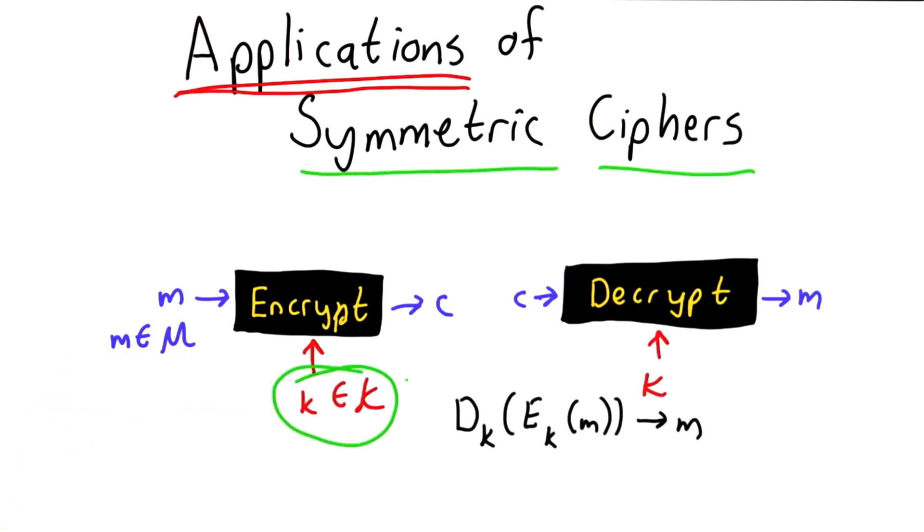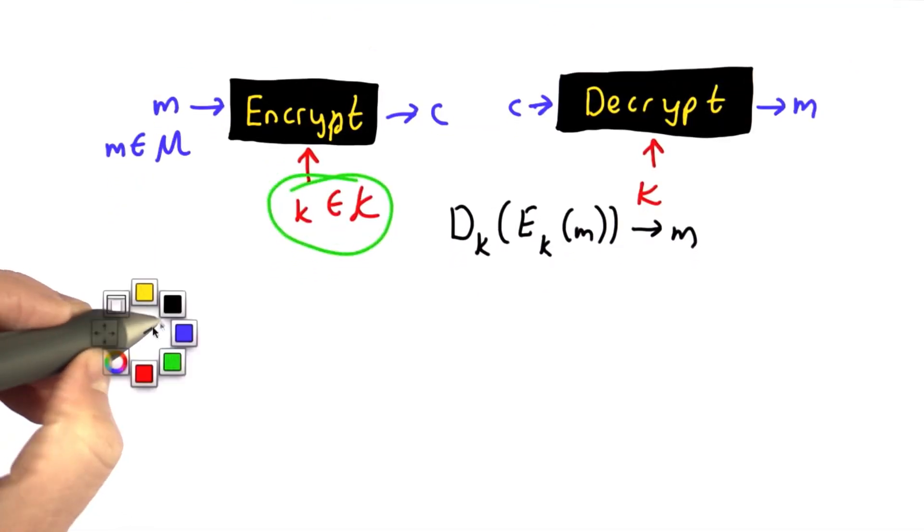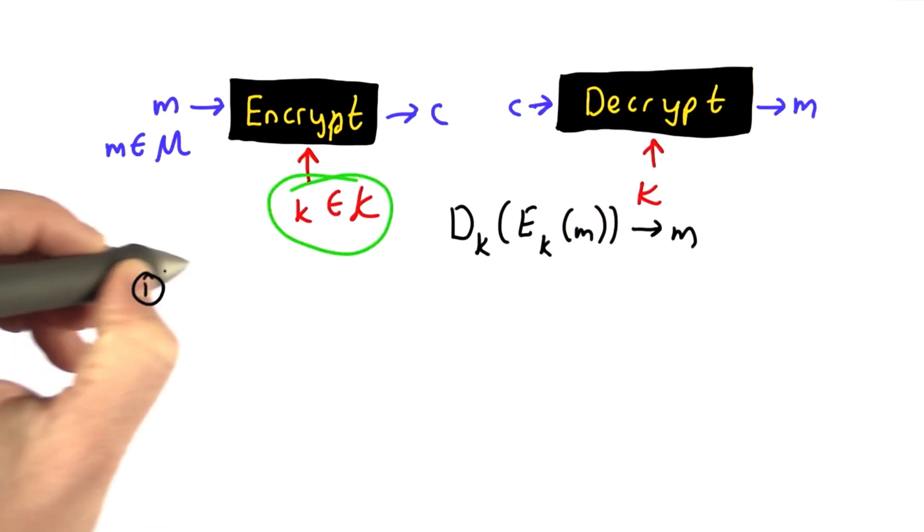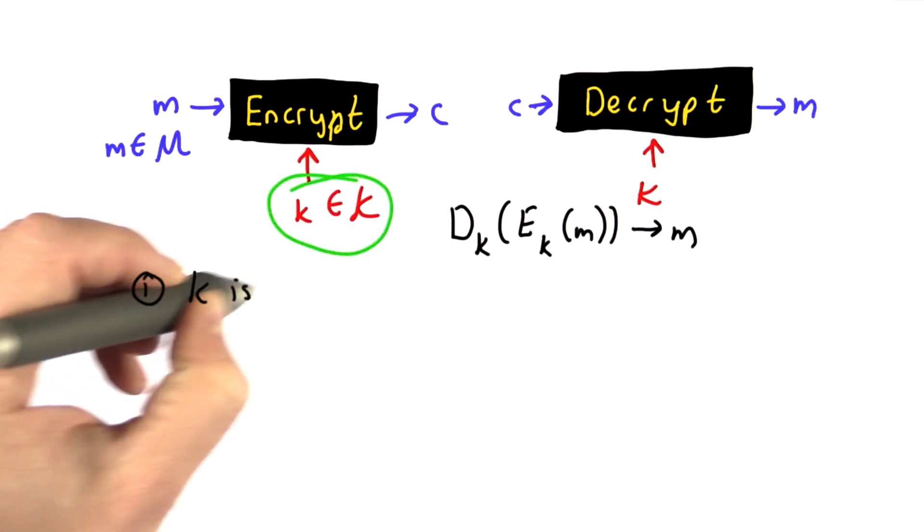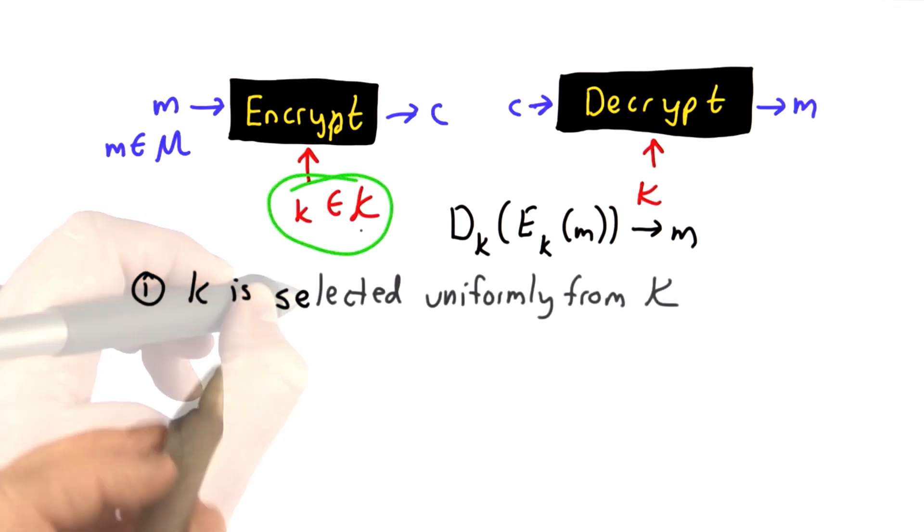The first thing we're going to look at is how we actually get this key. All of our assumptions about security depend on this key, and we have two key assumptions. The first is that the k is selected randomly and uniformly. This means each key is equally likely to be selected, and there's no predictability about what the key is.